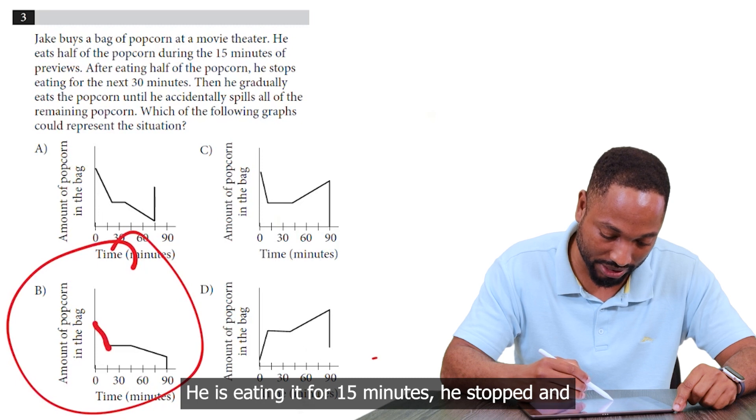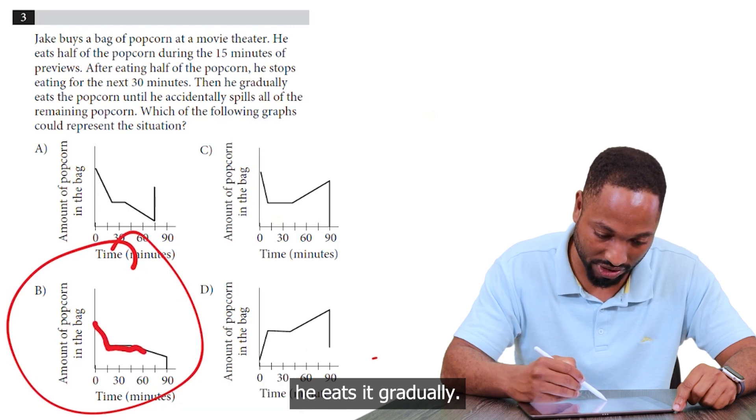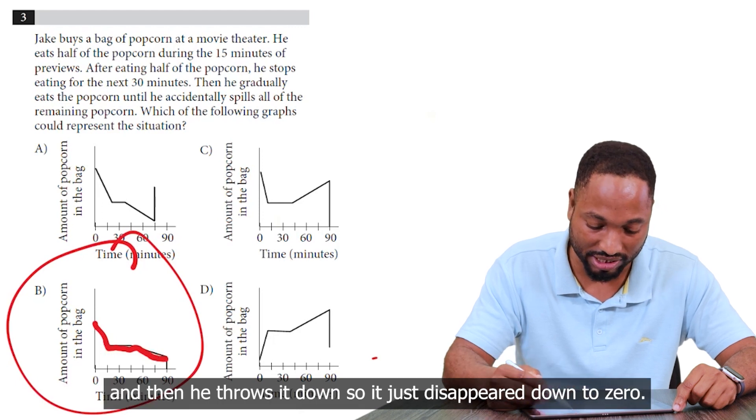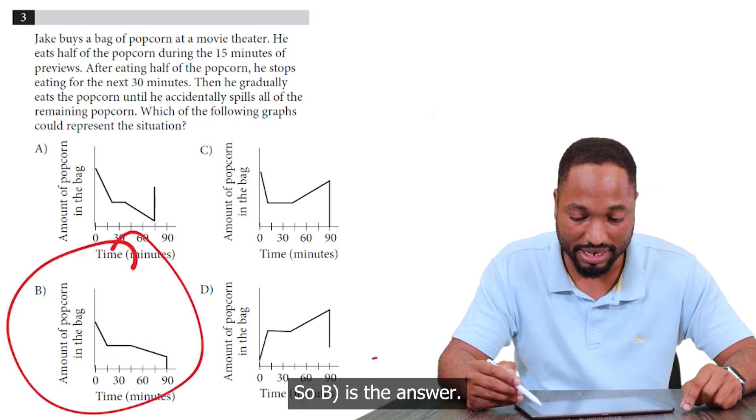He is eating it for 15 minutes. He stops. Then he eats it gradually. Tense part in the movie. So he started eating the popcorn and then he threw it down. So it just disappeared down to zero. So this is the answer.